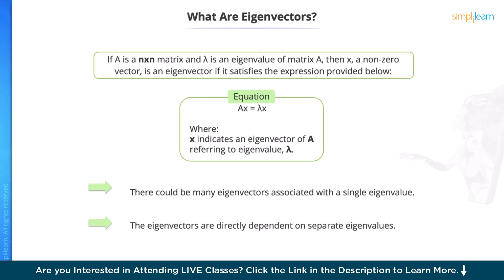If A is an N×N matrix and λ is an eigenvalue of matrix A, then X, a non-zero vector, is an eigenvector if it satisfies the expression AX = λX, where X indicates an eigenvector of A referring to the eigenvalue λ. There could be many eigenvectors associated with a single eigenvalue, and the eigenvectors are directly dependent on separate eigenvalues.